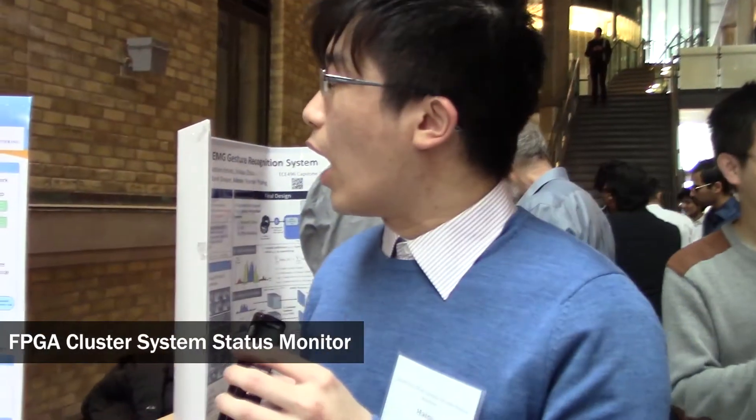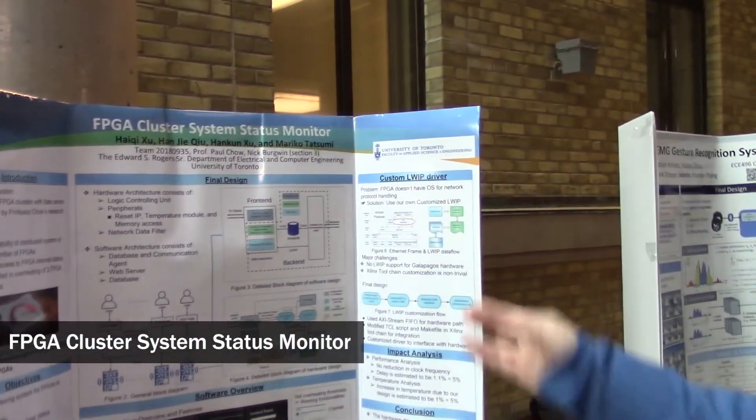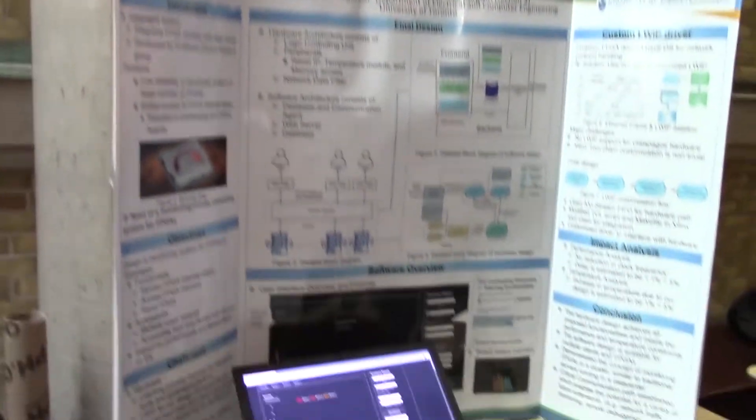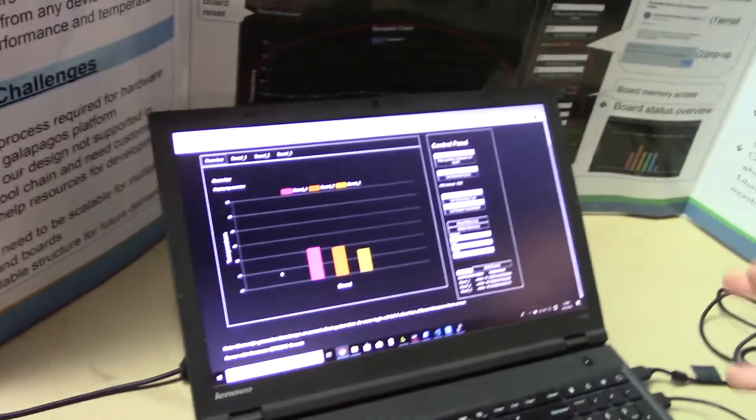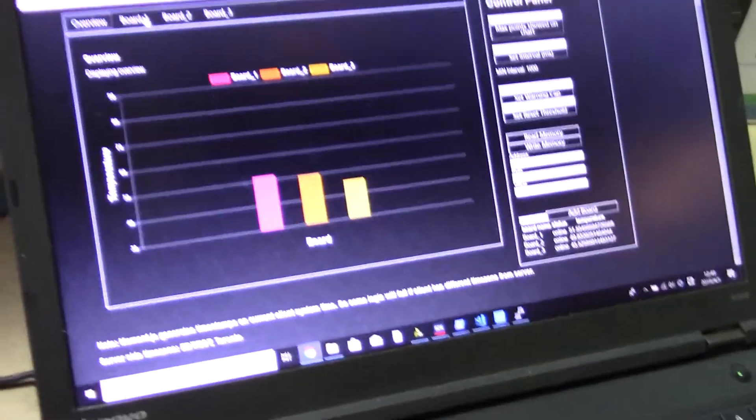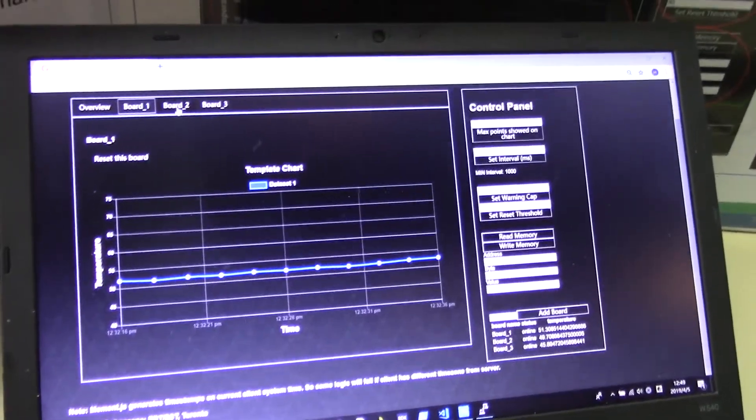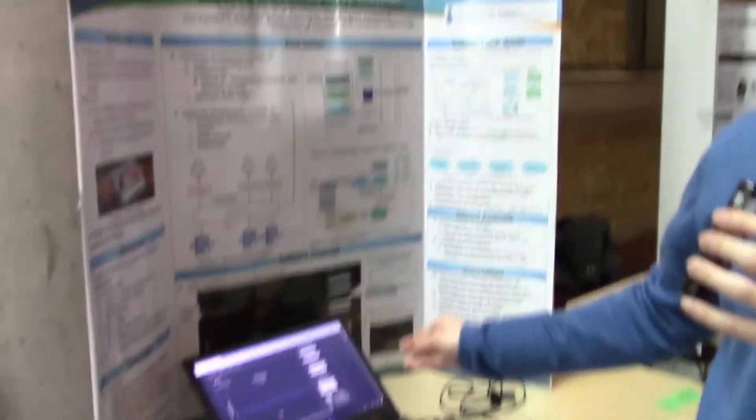Our final design contains both software and hardware. This is an example of our software front end. You can see those bars are the temperature of the FPGAs and we can choose each board and you can see the graph being updated. You can use this software external front end to control the IPC in the FPGA.